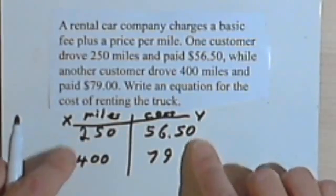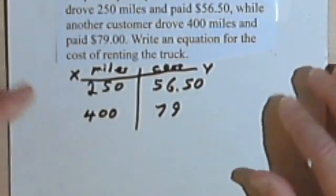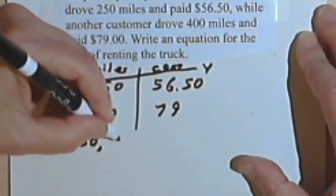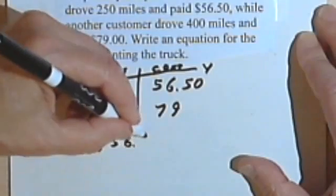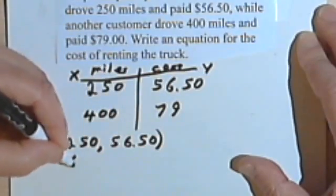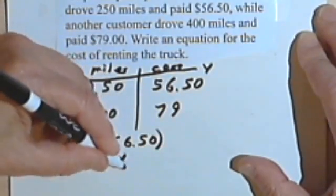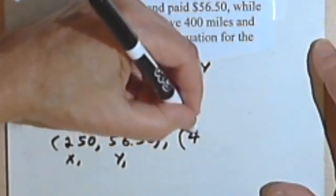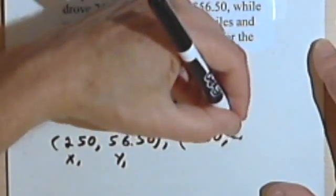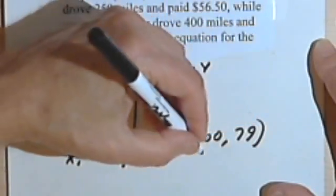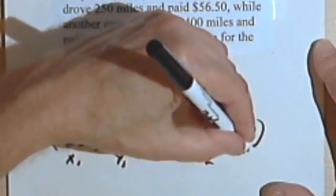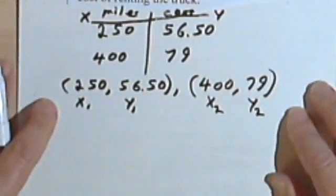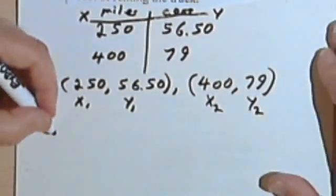So if we want to think of the miles as x's and the costs as y's, then we can think of these as ordered pairs. The first ordered pair is going to be (250, 56.50), that'll be x sub 1, y sub 1. And the other ordered pair is going to be (400, 79), and that's x sub 2, y sub 2. Since I have two ordered pairs, that means I have two points, so I can find the slope.